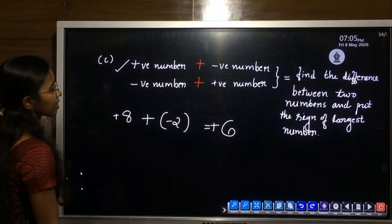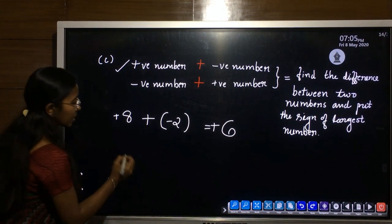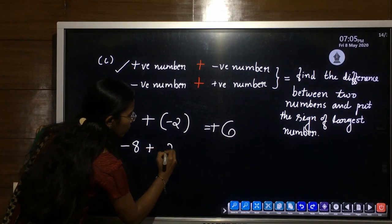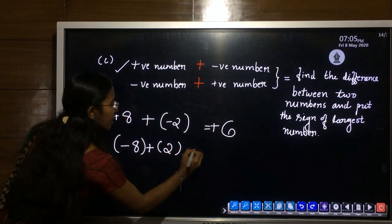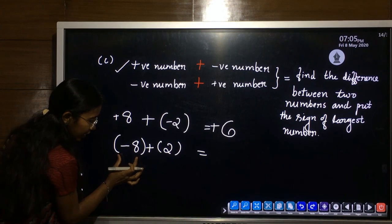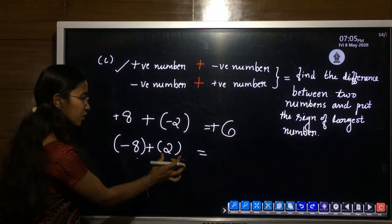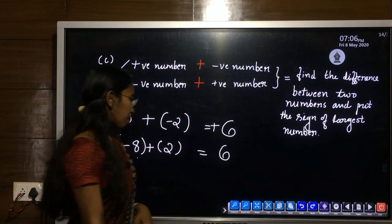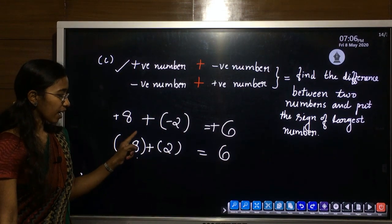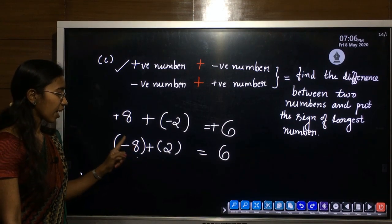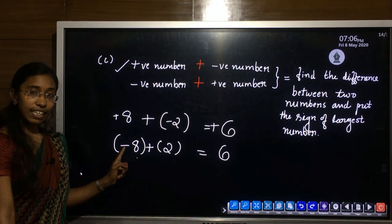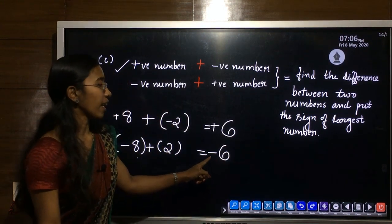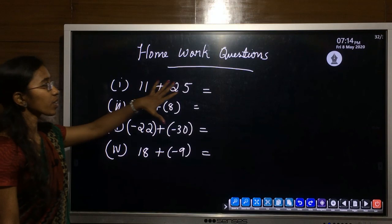In the second case, negative number plus positive number — for example, minus 8 plus 2. Here the first number is negative and the second is positive. Find the difference between two numbers: 8 minus 2 is 6. The largest value is 8 and its sign is negative, so we apply the negative sign. The answer is minus 6.